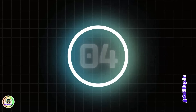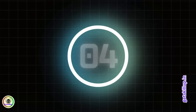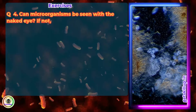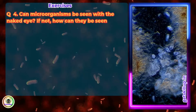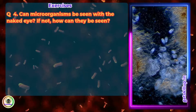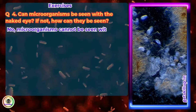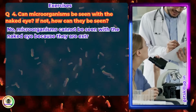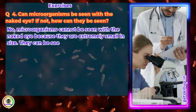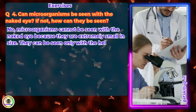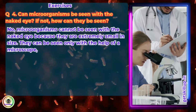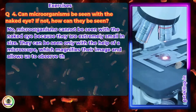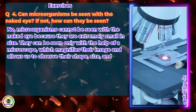Question 4. Can microorganisms be seen with the naked eye? If not, how can they be seen? Answer: No. Microorganisms cannot be seen with the naked eye because they are extremely small in size. They can be seen only with the help of a microscope, which magnifies their image and allows us to observe their shape, size, and structure.